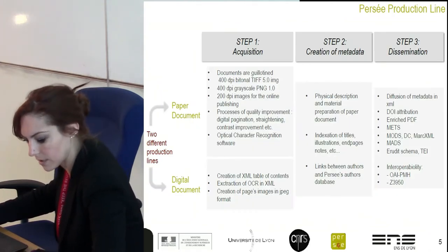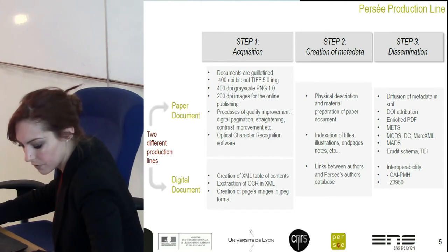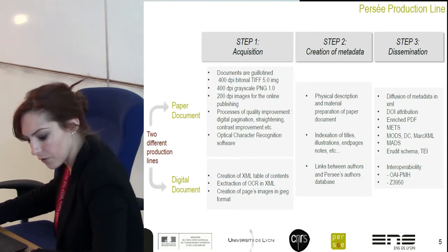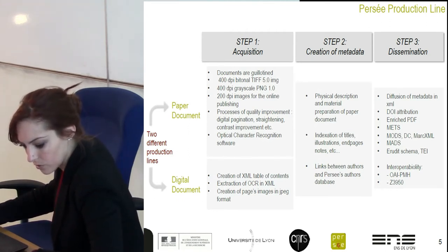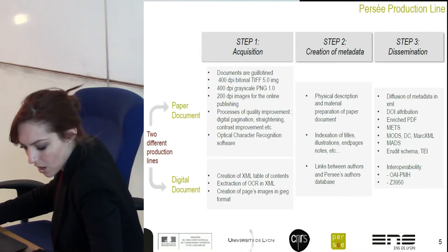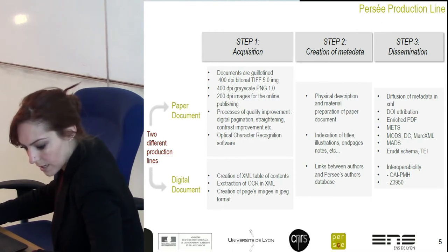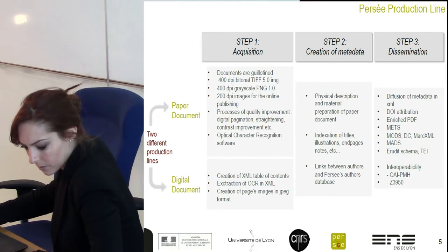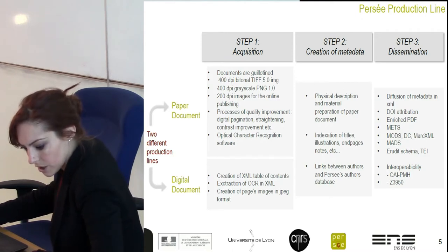You can see on this slide a diagram which provides a graphical overview of PERCE's production lines, synthesized in the most important steps. The first production process is based on paper journals. The journals' editorial committee sends us the exhaustive collection. All books are guillotined and the treatment is destructive for books. The second production line is based on the processing of digital documents like PDF. We extract images and text in XML format. Then we insert the data in our application, and we make a metadata enrichment for structuring the documentation: what are the titles,